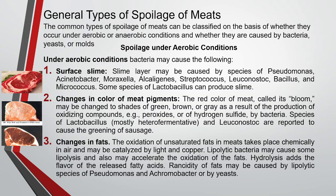Under aerobic conditions, bacteria may cause the following spoilage. First is surface slime, causing a slimy layer on the surface. Second is a change in the color of meat pigment — generally the red color of meat is called bloom. This red color changes to green, brown, or grey due to the production of oxidizing compounds like peroxides or hydrogen sulfide by bacteria.